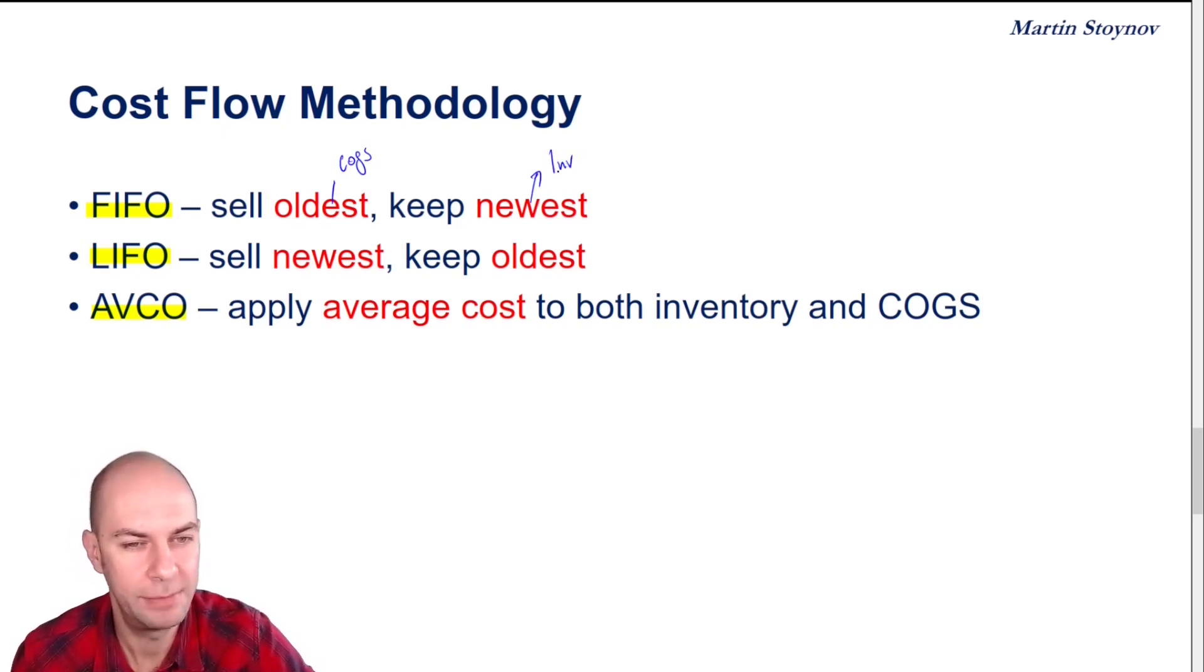Now, very important: the examiner will typically assume an inflationary environment. So that means your oldest units are also your cheapest units and your newest units are also your most expensive units. So when you run a FIFO system, you will find that your COGS is lower because it keeps those oldest, cheapest units, and your inventory is higher because it keeps those newest, more expensive units. That's relative to the other system, of course.